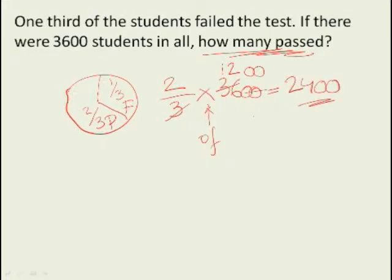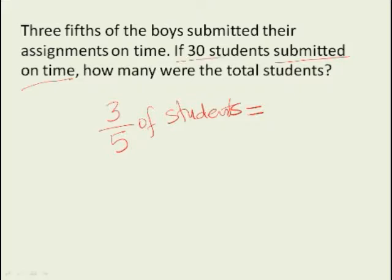Next: three fifths of the boys submitted their assignments on time. If 30 students submitted on time, how many were the total students? It's the same fraction they are talking about, so it means three fifths of the students submitted on time and they've also given us the actual number of students who submitted on time, that's 30.